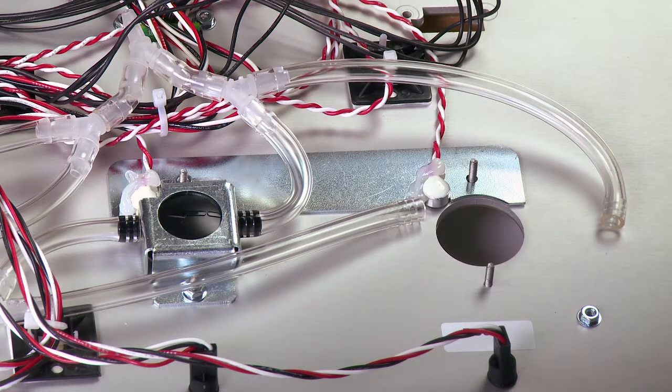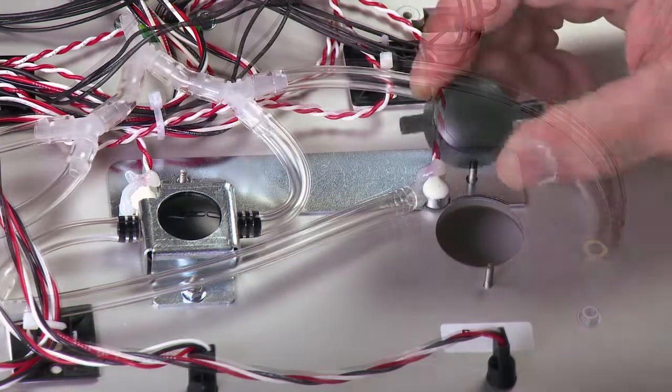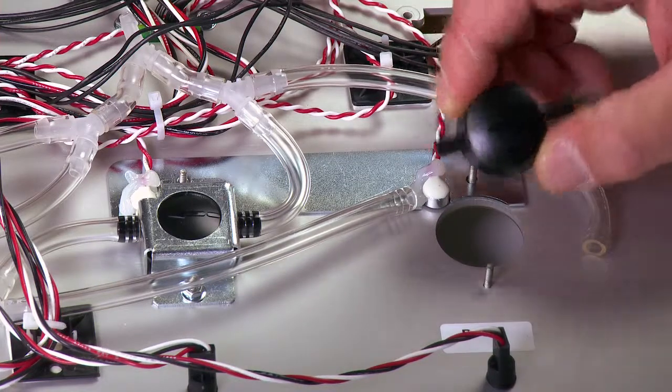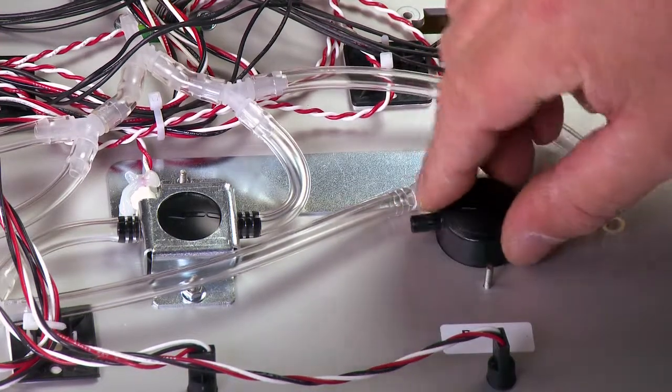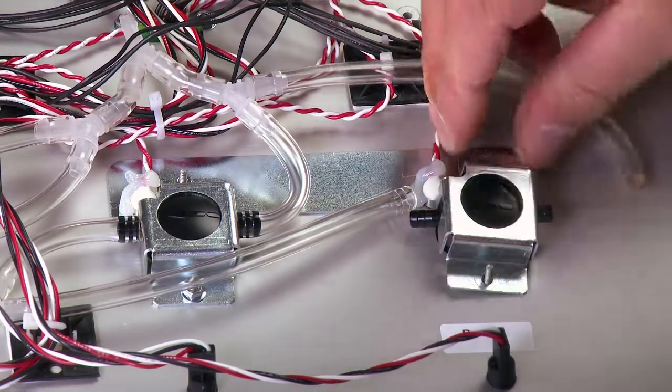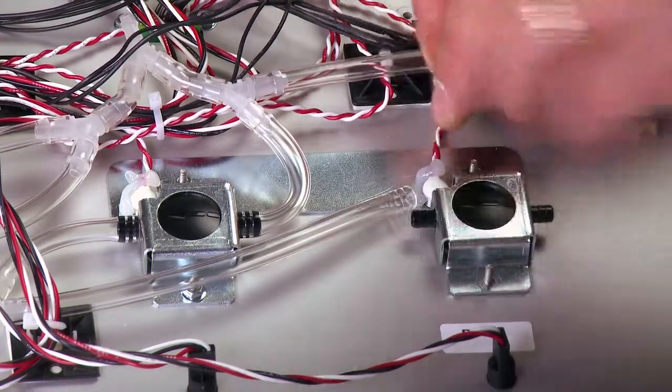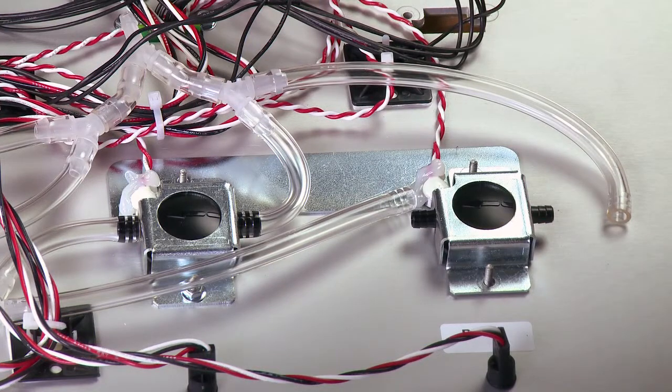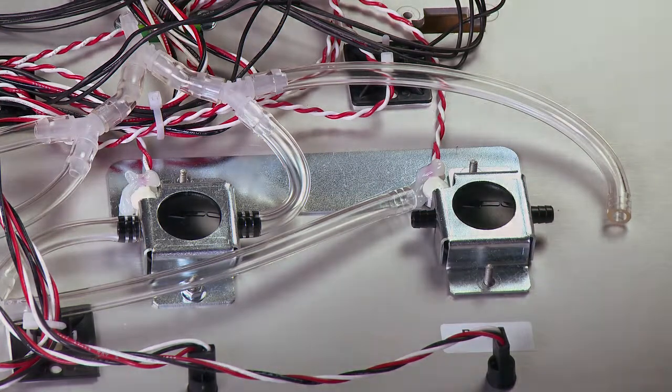You can now remove the bad calibration cup. As you remove it, note the orientation of the arrow on the cup showing the flow of gas from the inlet tube to the outlet tube. The new calibration cup can now be installed. Make sure the gas flow arrow is oriented in the correct direction.